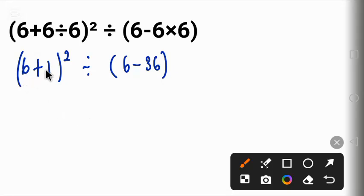6 plus 1 is 7. 7 raised to power 2 divided by 6 minus 36, which gives us minus 30.